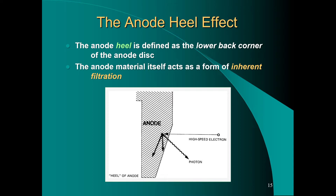Demonstrated here: a high-speed electron interacts with the anode, producing x-rays through characteristic and bremsstrahlung interactions. In this illustration, a high-speed electron creates three photons from one spot. One photon travels toward the cathode end, one travels roughly downward, and one travels toward the heel of the anode. The photon toward the cathode end will be largely unattenuated; the photon going straight downward will have greater attenuation; and the photon traveling toward the heel will be attenuated the greatest.